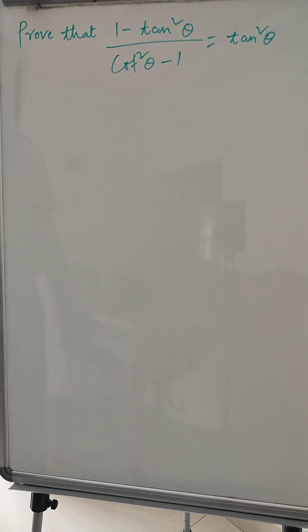Hi everyone, so today we have one problem. We have to prove that 1 minus tan square theta divided by cot square theta minus 1 is equal to tan square theta. So let's start doing this.